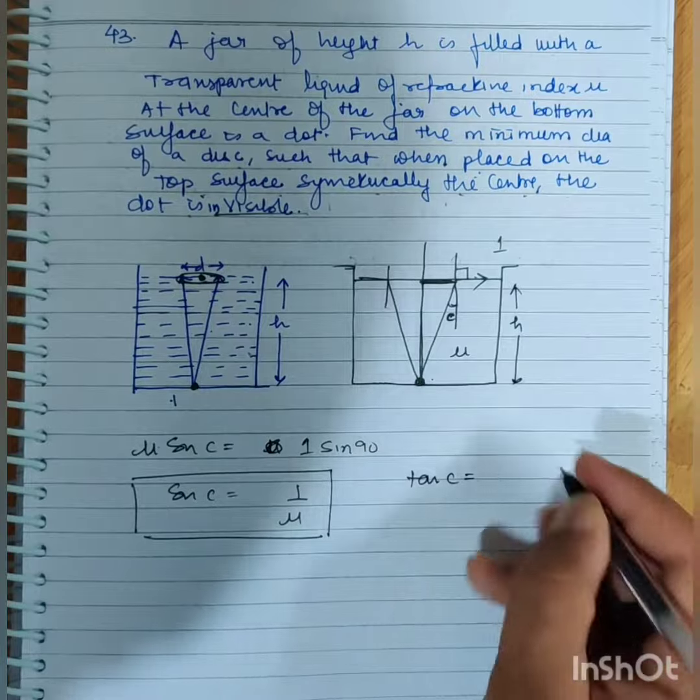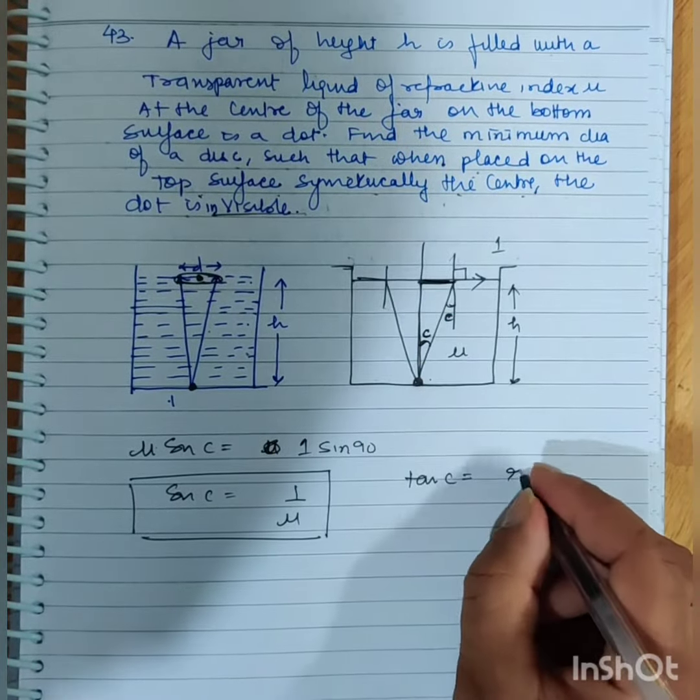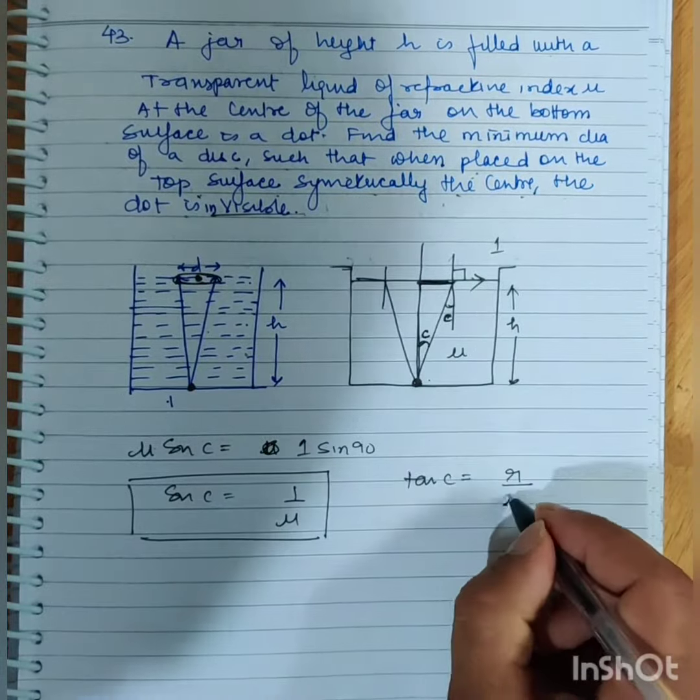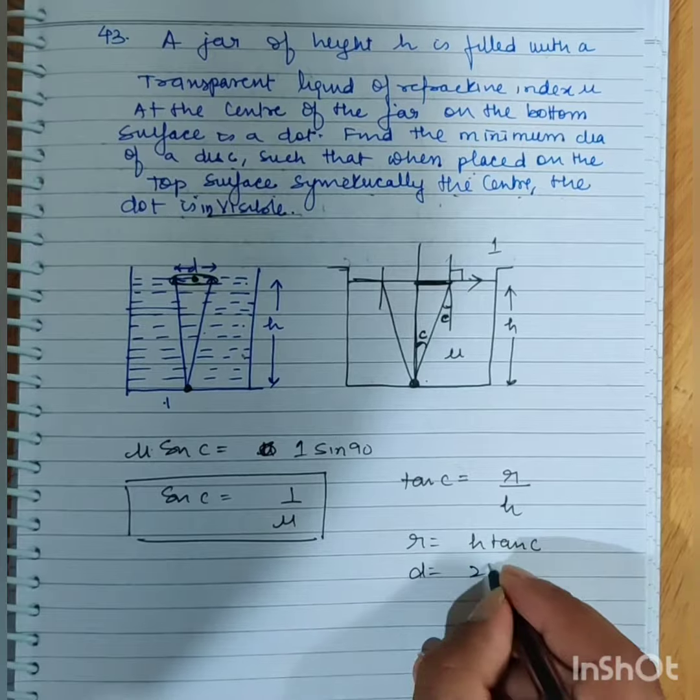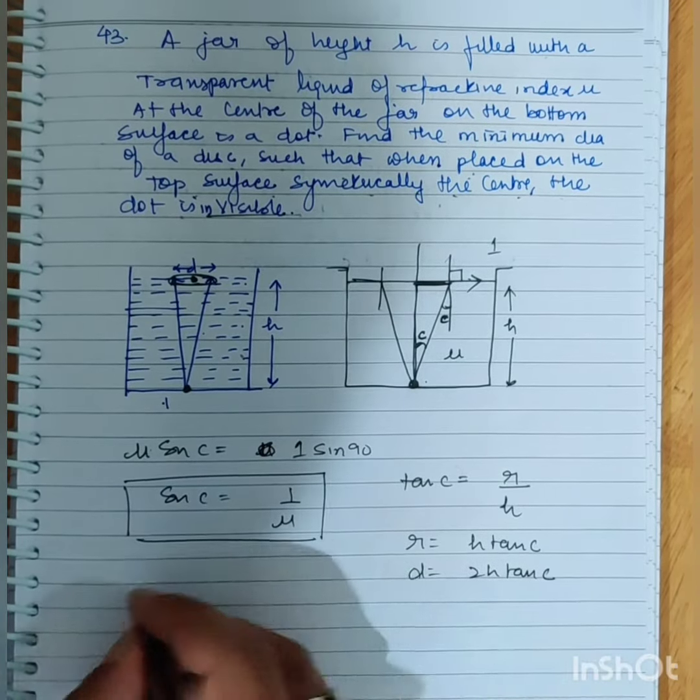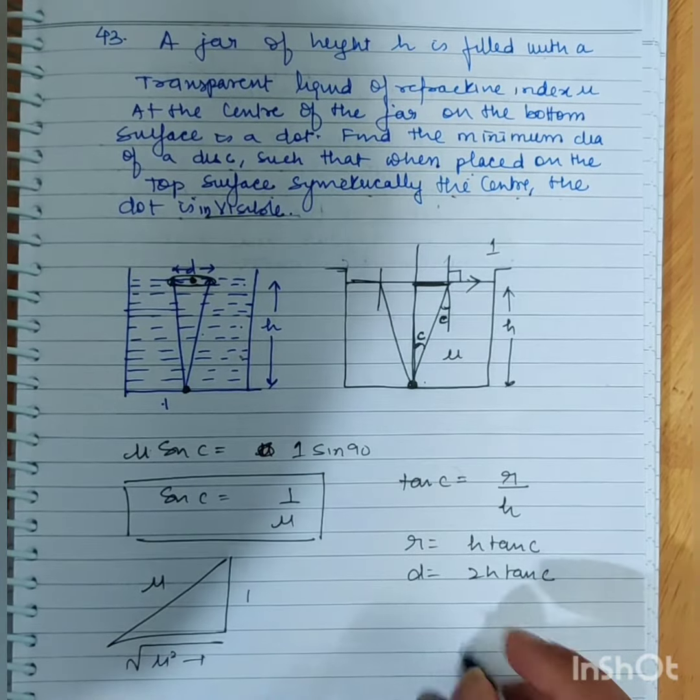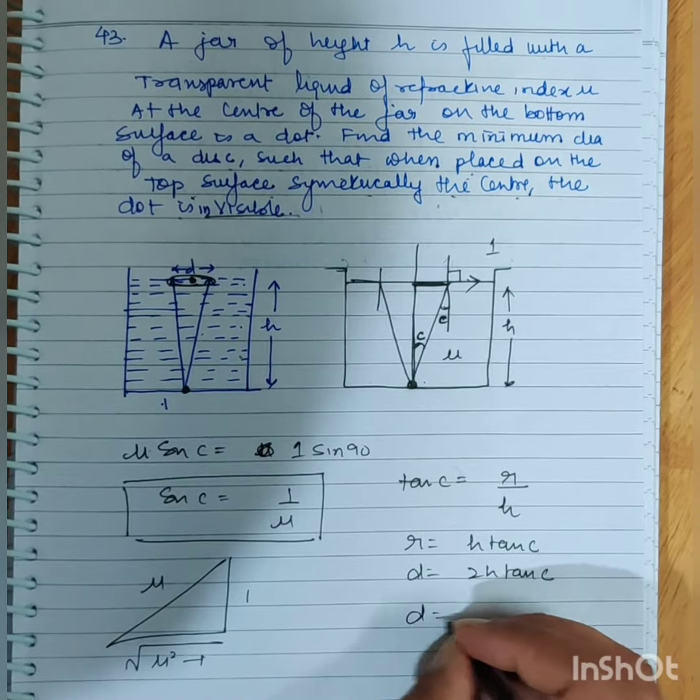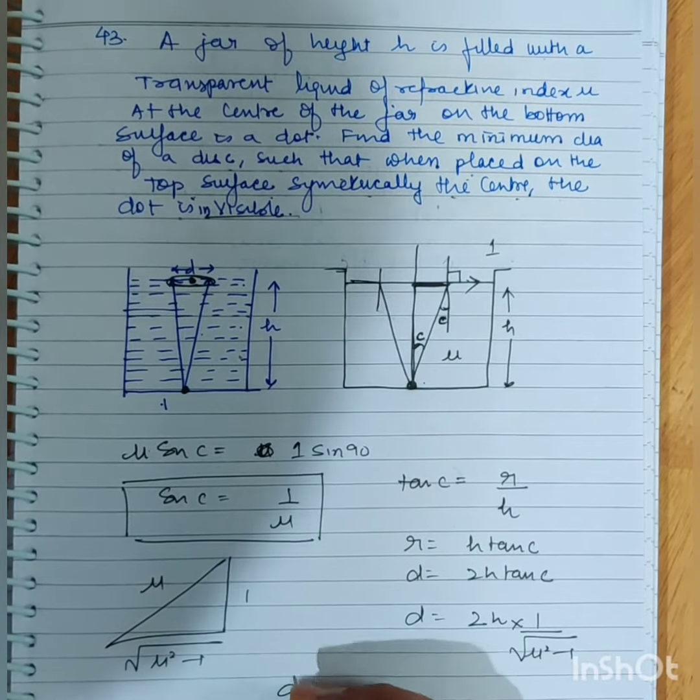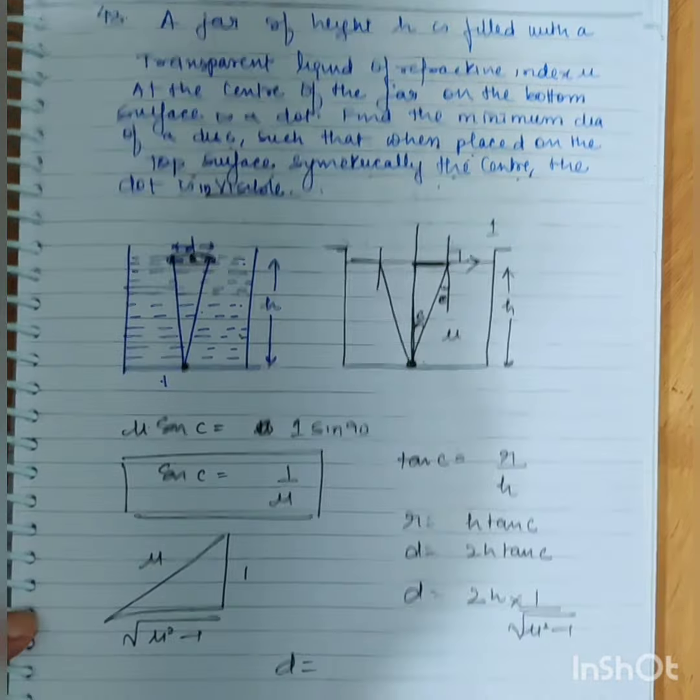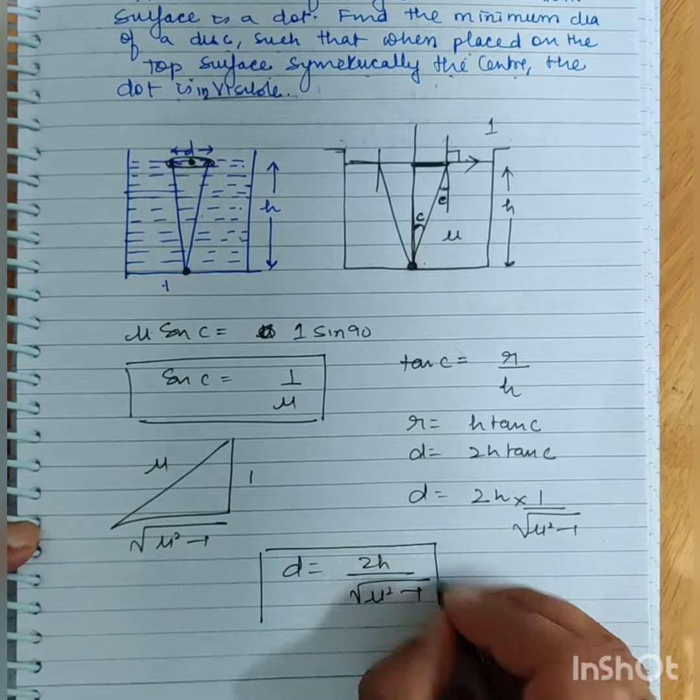Tan c - this angle is alternate. The perpendicular is the radius and this is h, so r equals h tan c and diameter is 2h tan c. Therefore, diameter equals 2h divided by square root of mu squared minus 1, and that is the final answer.